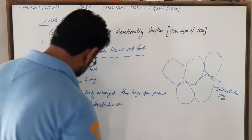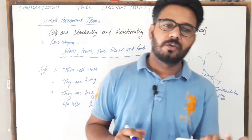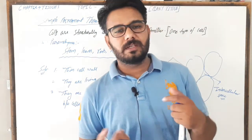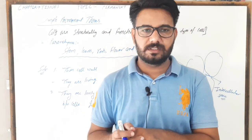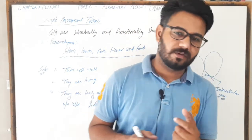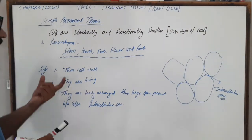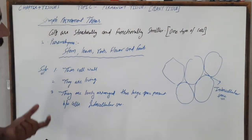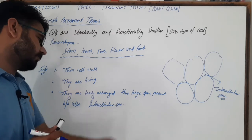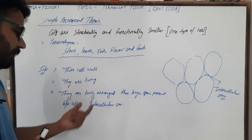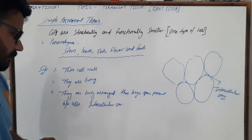Now if we talk about the function of parenchyma, it can also be called a food storage tissue because here a large central vacuole is present and intercellular spaces are also present. So the function is food storage.